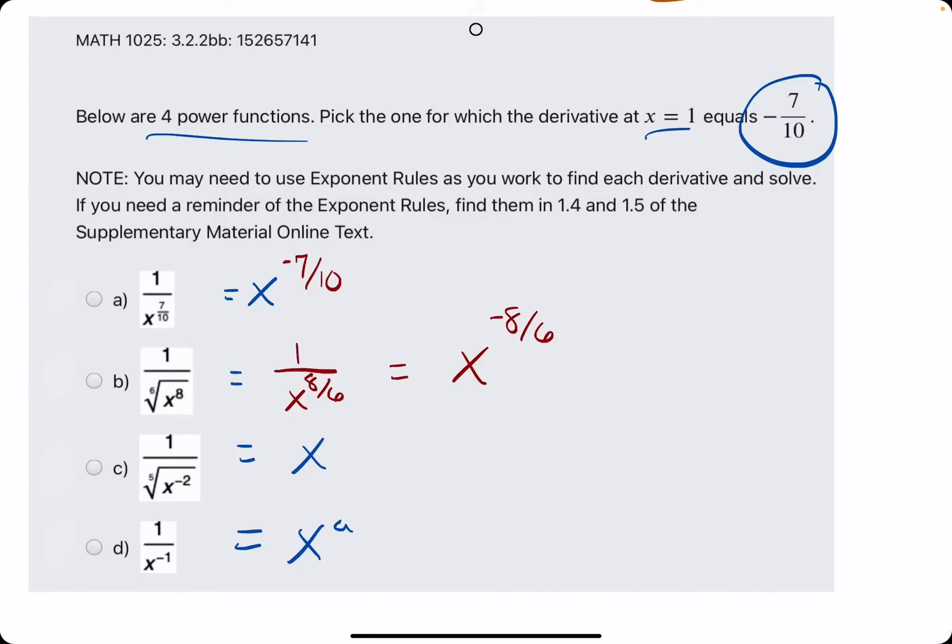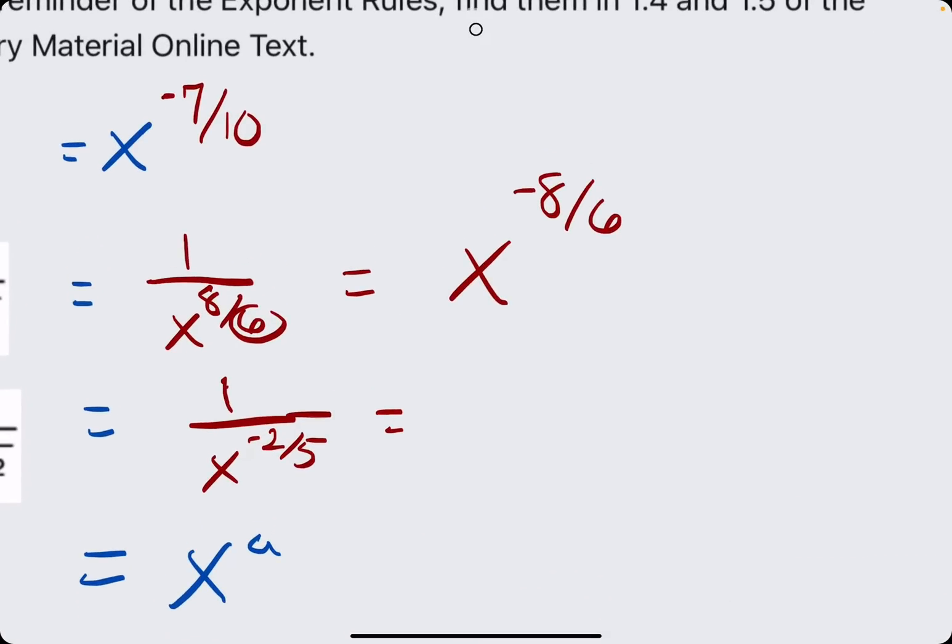x to the a here, let's go ahead and do this one in two steps as well. 1 over x to the negative 2 fifths. Again, whatever the root is becomes our denominator in each case. And then if we rewrite 1 over x to the negative 2 fifths, that x comes up top, and the exponent becomes positive.